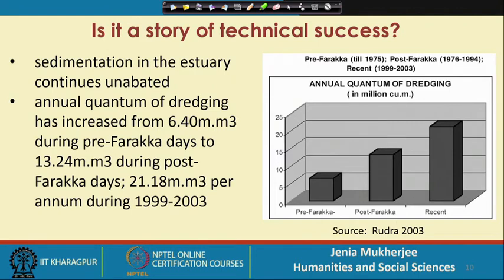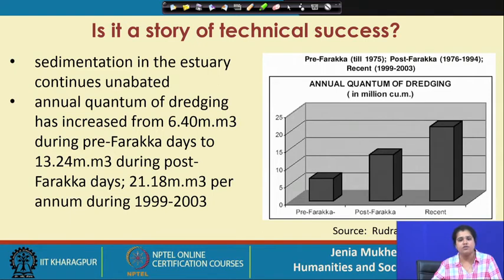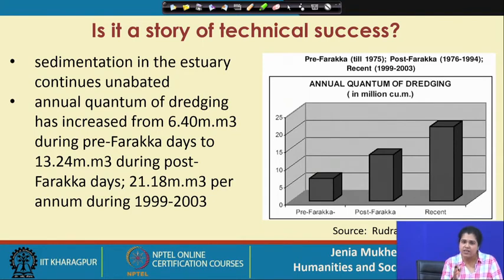Is there a gap between the official projection and the actual reality? From the 1850s to the 1950s we have seen how most experts talked in favour of the construction of the barrage, with the idea that it was vital to revive the Kolkata Port through revival of the river regime and navigability of Bhagirathi-Hooghly. But then is it a story of technical success? Even if we only concentrate on the technical component for now and raise this particular question — is it a story of technical success?